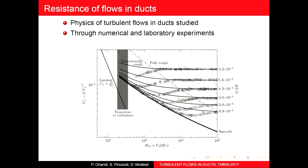The data in this region are mainly from the experiments of Nikuradze. At a certain point, the friction becomes constant — it no longer depends on Reynolds number, only on roughness. To me, this fully rough region is not the most interesting one, even though many people study high Reynolds number behavior there.